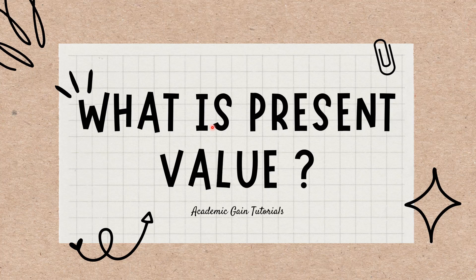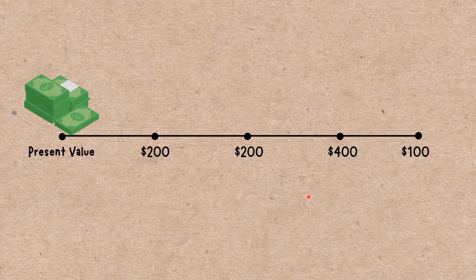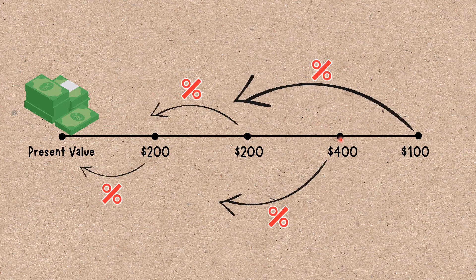Present value is the current value of a future sum of money or stream of cash flows given a specified rate of return. Future cash flows are discounted at the discount rate, and the higher the discount rate, the lower the present value of the future cash flows. Determining the appropriate discount rate is the key to properly valuing future cash flows, whether they be earnings or debt obligations.